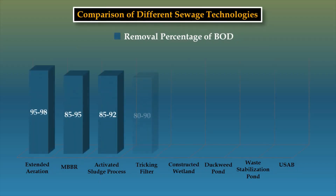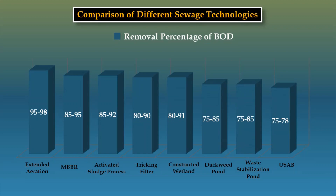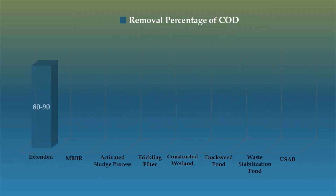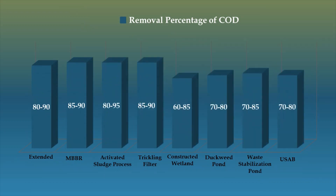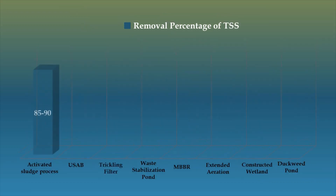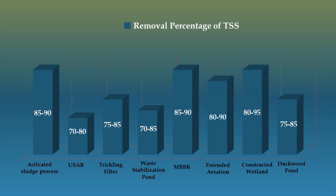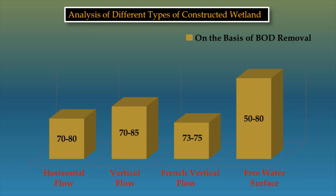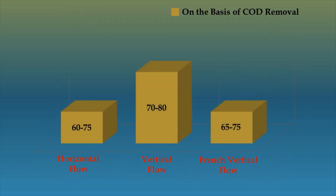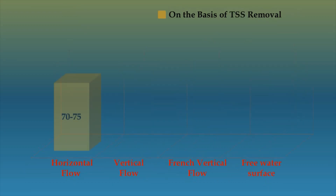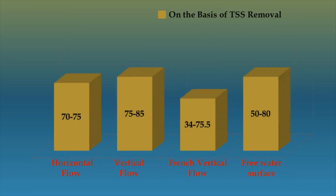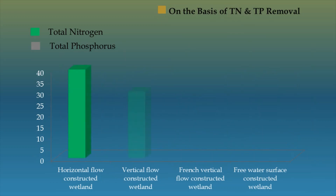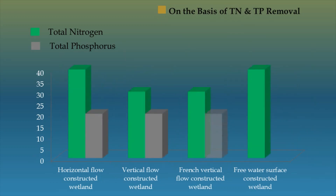Comparison of different sewage treatment plants on the basis of removal percentage of biochemical oxygen demand, removal percentage of chemical oxygen demand, and removal percentage of total suspended solids. Analysis of different types of constructed wetland on the basis of biochemical oxygen demand removal, chemical oxygen demand removal, total suspended solids removal, total nitrogen and total phosphorus removal.